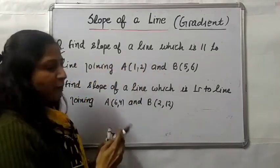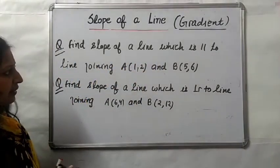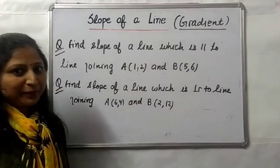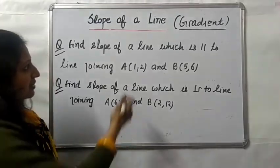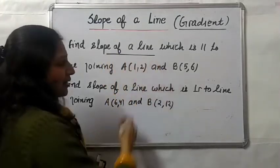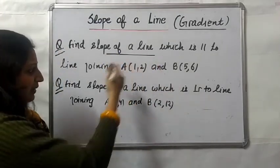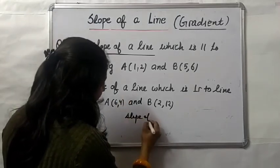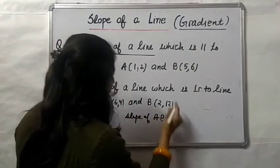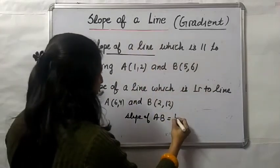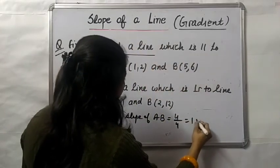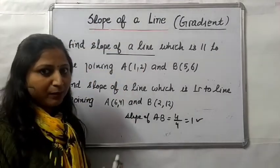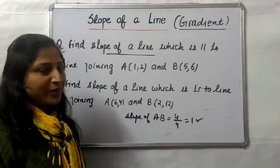Next question: find the slope of a line which is parallel to the line joining A(1, 2) and B(5, 6). Since the required line is parallel to AB, its slope equals the slope of AB. Slope of AB = (6 − 2) / (5 − 1) = 4/4 = 1. Therefore, the slope of the required line is also 1.